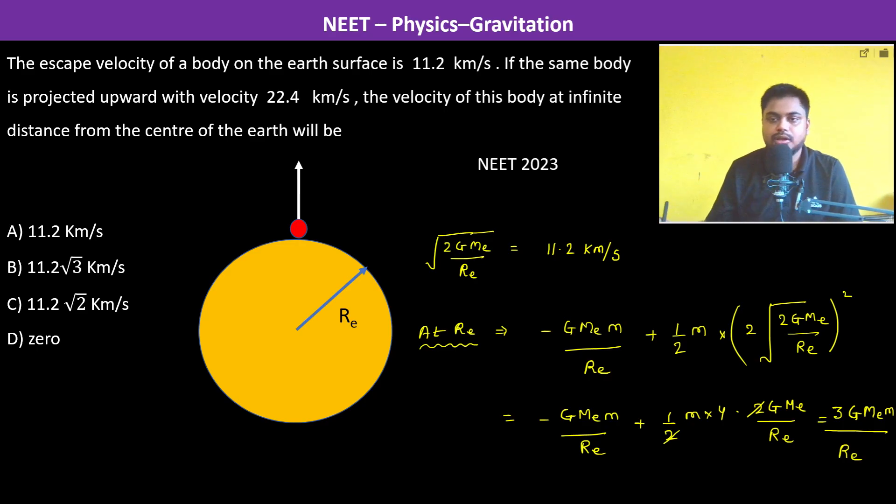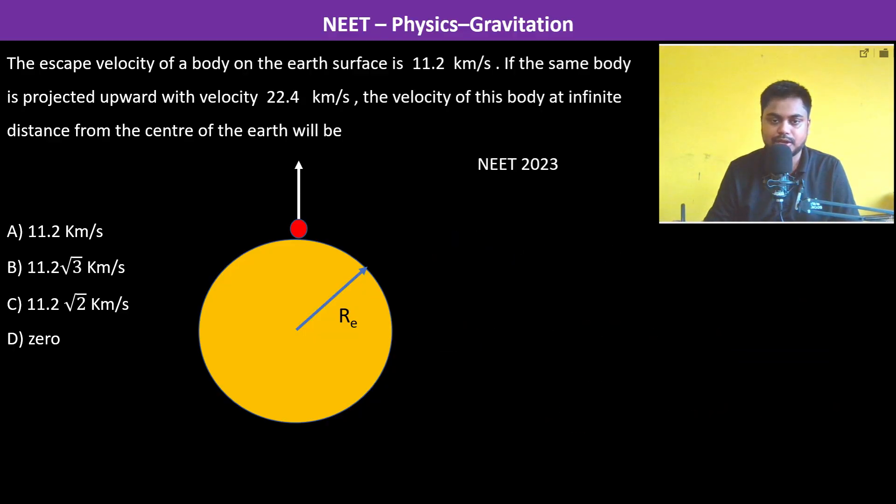Now at infinity, the distance becomes infinity, so the potential energy is going to be 0. Therefore at infinity, we have PE = 0, KE = ½mv². So therefore the total energy is going to be